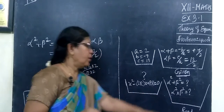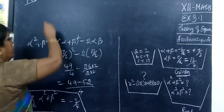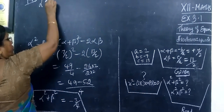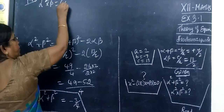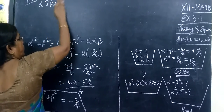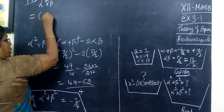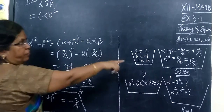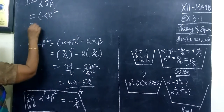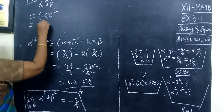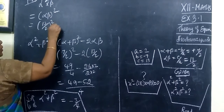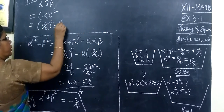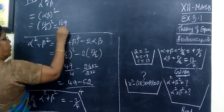The product of the new roots is alpha squared into beta squared, which equals alpha beta the whole squared. Alpha beta equals 13 by 2, so 13 by 2 the whole squared equals 169 by 4.